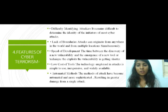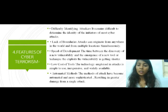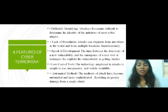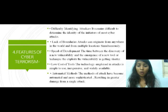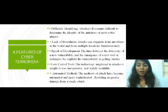The features of cyber terrorism include five things. First, difficulty identifying attackers — it is difficult to identify who initiated the crime. Second, lack of boundary — the crime can be carried out anywhere in the world, not limited to a particular area or city. Third, speed of development — technology and different techniques and tools develop very frequently. Fourth, low cost of tools — tools have become widely available, simple to use, and inexpensive. Fifth, automated methods — attack methods have become automated and more sophisticated, resulting in greater damage from a single attack.